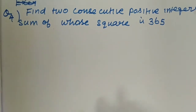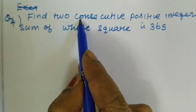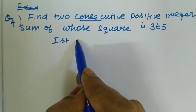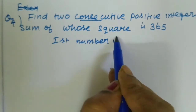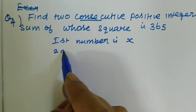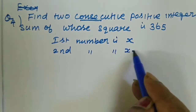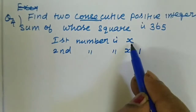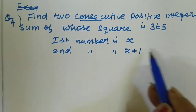Let the first number be x and the second number be x plus 1. Consecutive numbers means the first number is x and the second number is x plus 1. For example, if the first number is 6, the second number is 6 plus 1, which is 7.